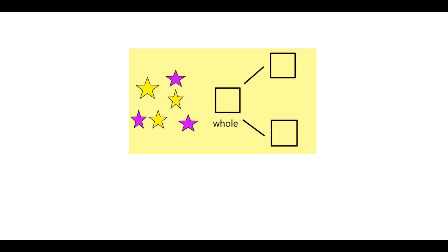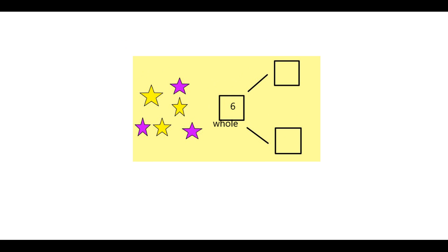And that is what we have all together over here. So you can see all together we have one, two, three, four, five, six. So I'm just going to type in here six and that goes in that box there.